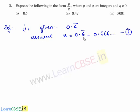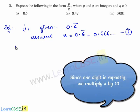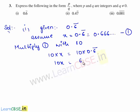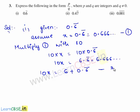Since in the given decimal expansion one digit is repeating, we multiply equation 1 with 10. This gives 10x is equal to 10 times 0.6 bar, which is 6.666 and so on, that is 6.6 bar. This can be written as 10x is equal to 6 plus 0.6 bar. Consider this as equation 2.